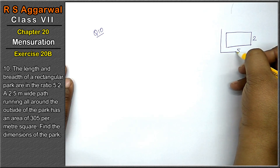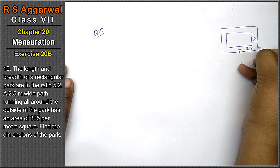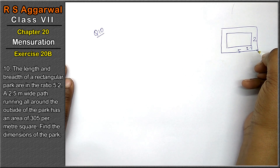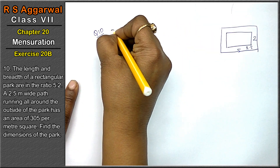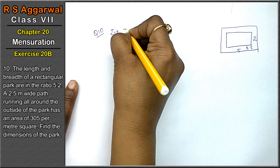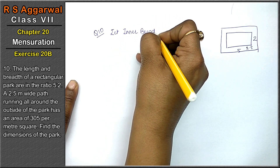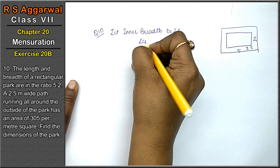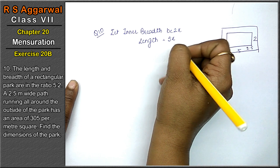There is a 2.5 meter wide path running all around the outside of the park. The path outside the park has an area of 305 square meters. Find the dimensions of the park. Let inner breadth be 2x, so inner length is 5x.